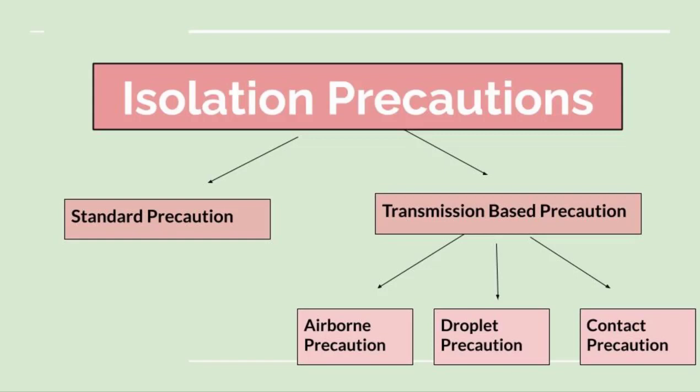What is transmission-based precaution? It can be airborne precaution, droplet precaution, or contact precaution. Airborne and droplet precautions can both be transmitted through respiratory droplets. If the respiratory droplets are smaller in size, they can travel far in the air and be inhaled by a person — this is seen in airborne precaution.